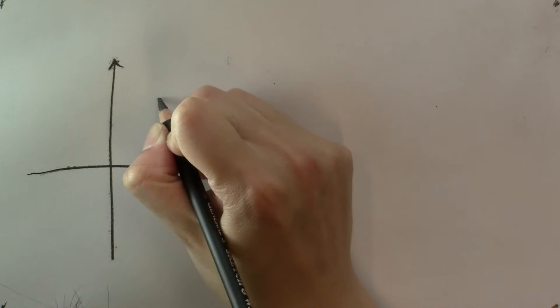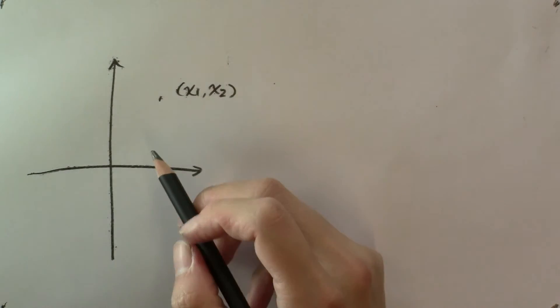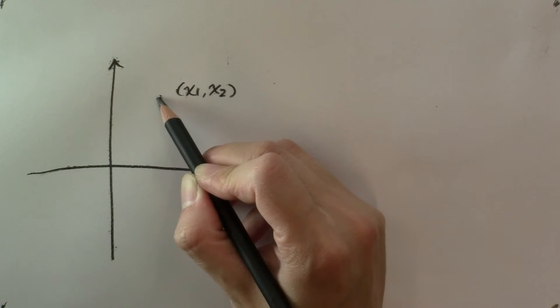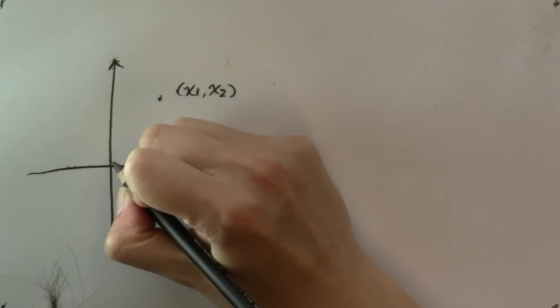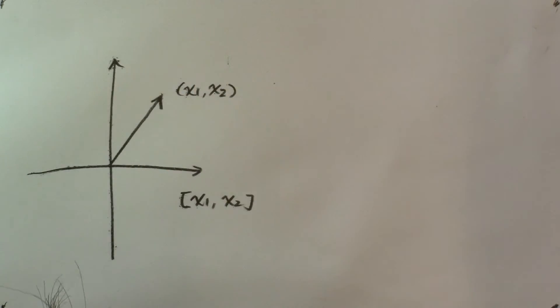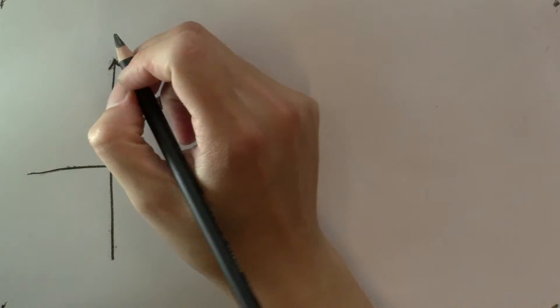So just like any two tuple x sub 1, x sub 2 represents a point in the two-dimensional plane, any vector x sub 1, x sub 2 represents a vector in the two-dimensional plane. This plane is often referred to as the Euclidean space R2,